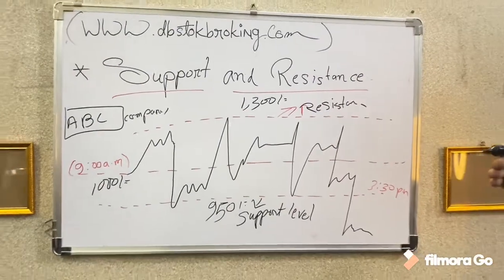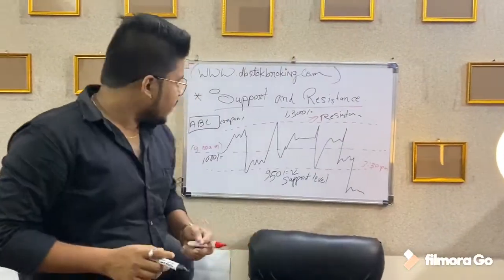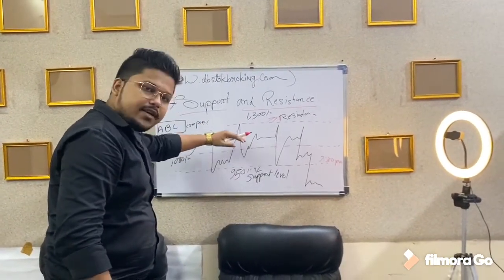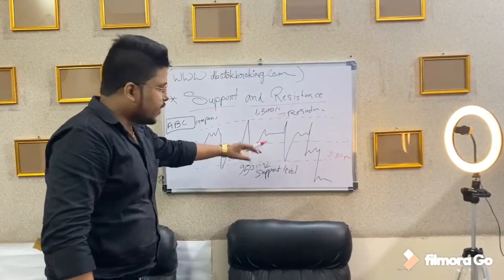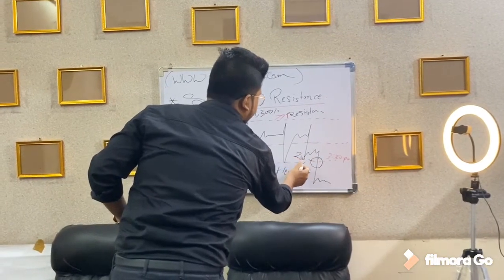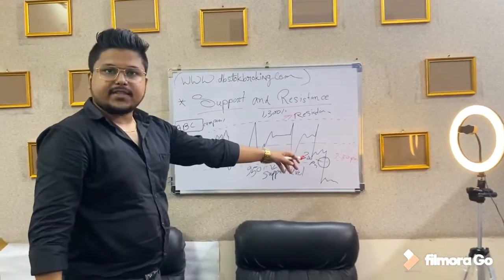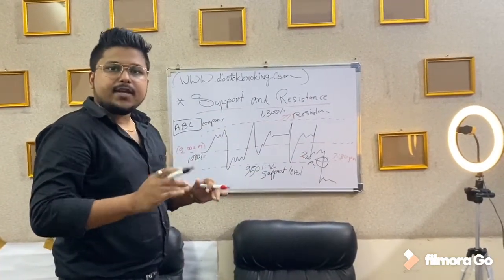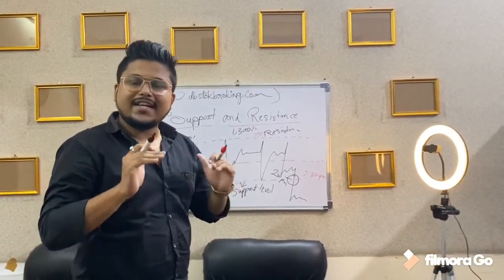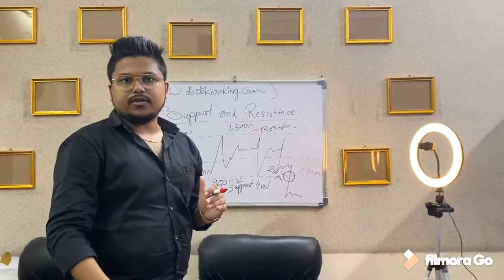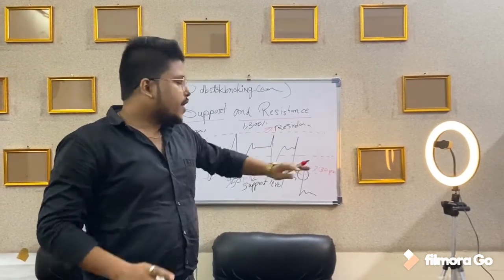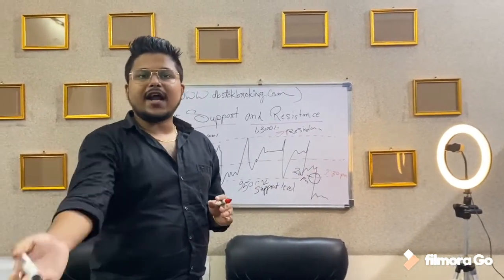Now in this scenario, what exactly happens? You can see that the whole graph is under both the resistance and support levels. But at this point, you can say at 2 p.m., the support level breaks. That means if a particular company breaks the support level price, then it goes drastically downward. Whenever the support level breaks of a particular company, the price goes down around 50, 100, or 200 points.